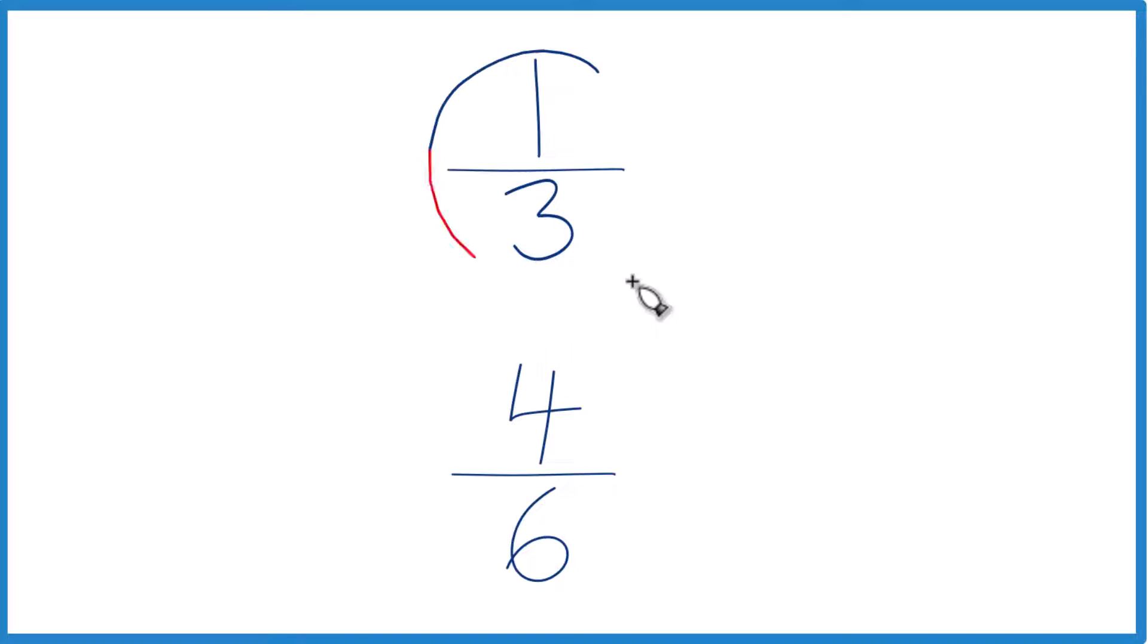So which fraction here is greater, 1 3rd or 4 6ths, and how do you tell?